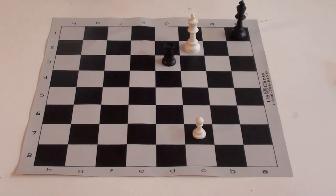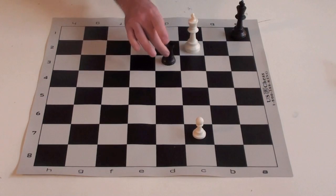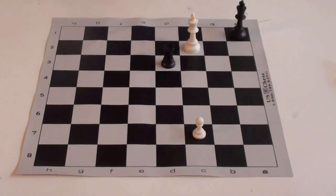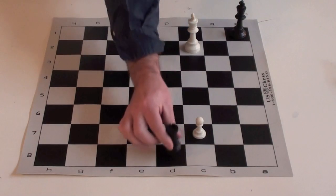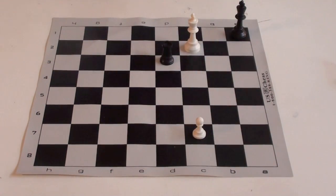Now, notice he cannot be put into check without the rook being lost. So the pawn is going to promote. And we know it's not going to be able to stop the pawn. So what is black's best move here?